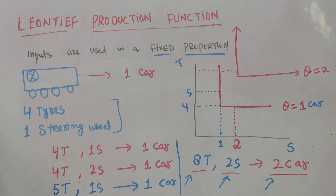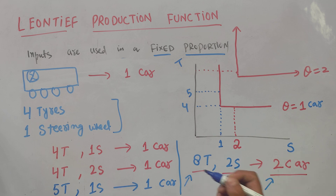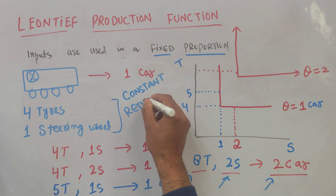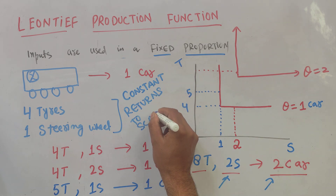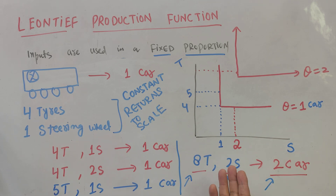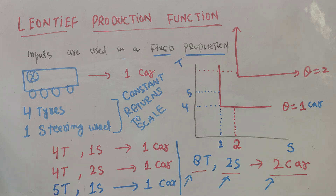Another important property of the Leontief production function is that it exhibits constant returns to scale. By constant returns to scale, we mean if we change the units of inputs by a certain proportion, output will also increase by that very proportion — so doubling the inputs doubles the production of cars in this example. We also call this the fixed proportion production function.